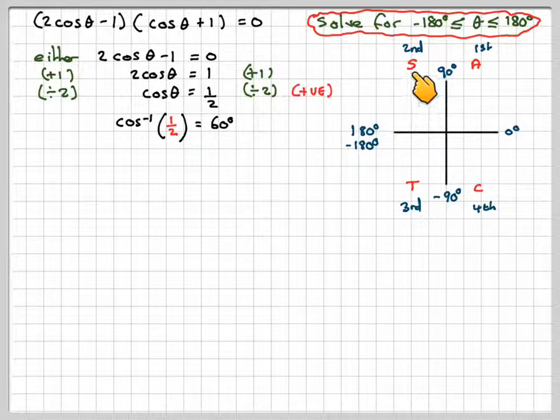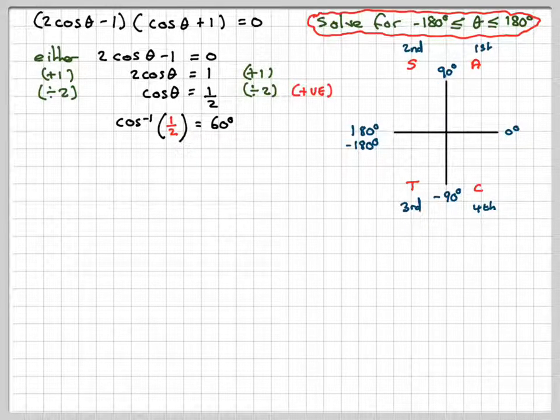This tells me in the first that they're all positive, in the second that sine is positive, in the third tangent is positive, and in the fourth cosine is positive. South Asian tennis club is the way that I remember that.